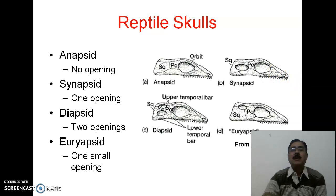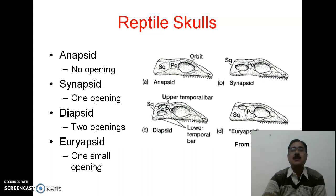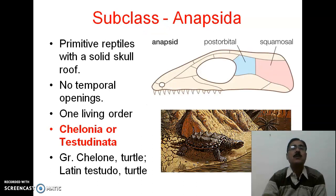So we are talking about the reptilian skull and what kind of temporal fossa occurs in the case of anapsid.